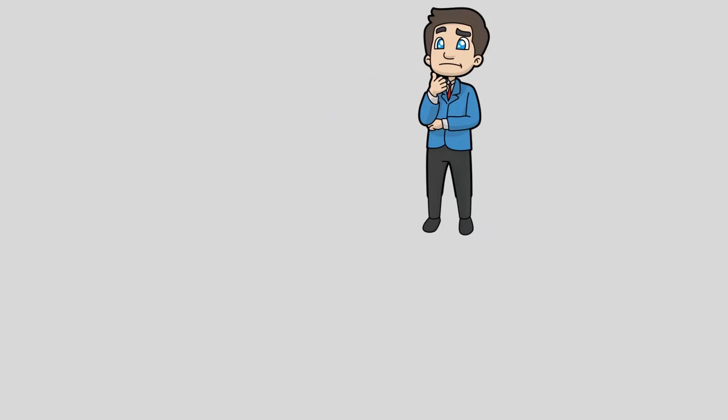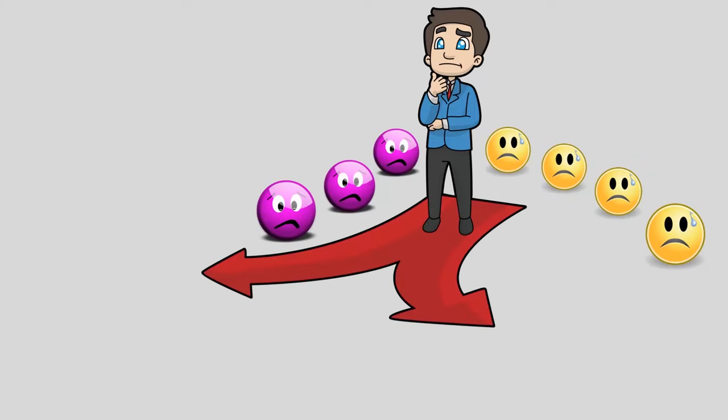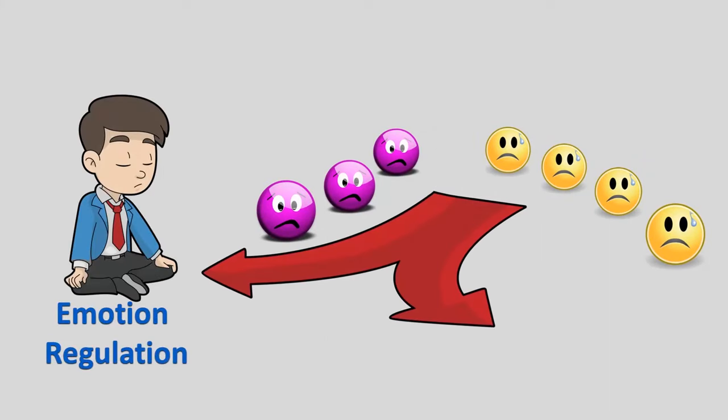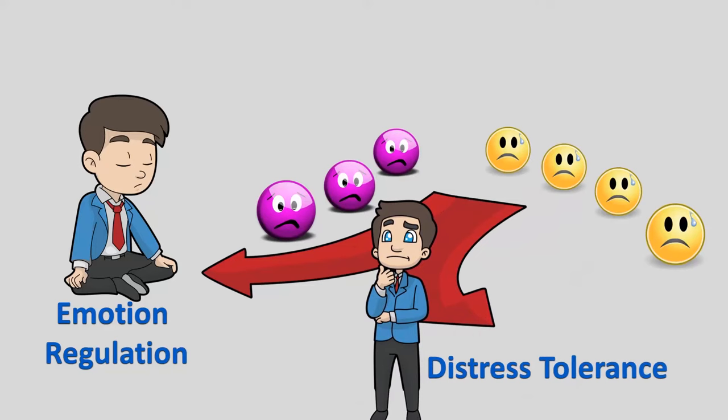So when something happens and we have a strong emotional reaction, how do we decide if we should respond to how we're feeling with emotion regulation skills and open ourselves up to our emotions? Or distress tolerance skills and put some distance between ourselves and our emotions?